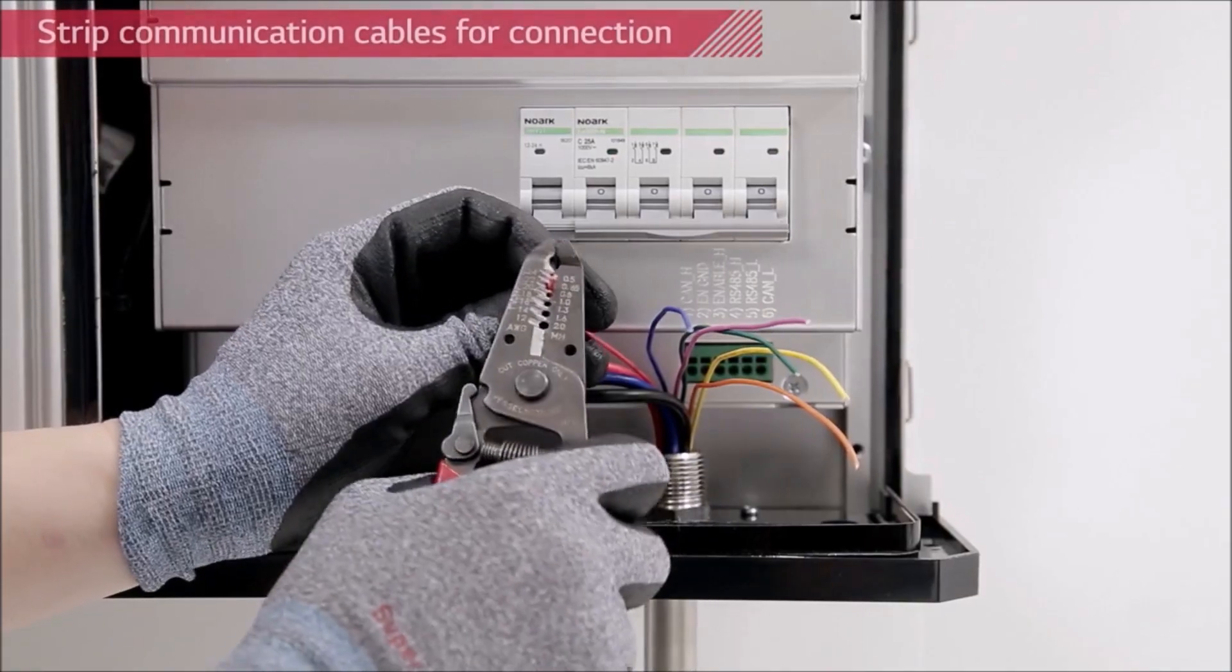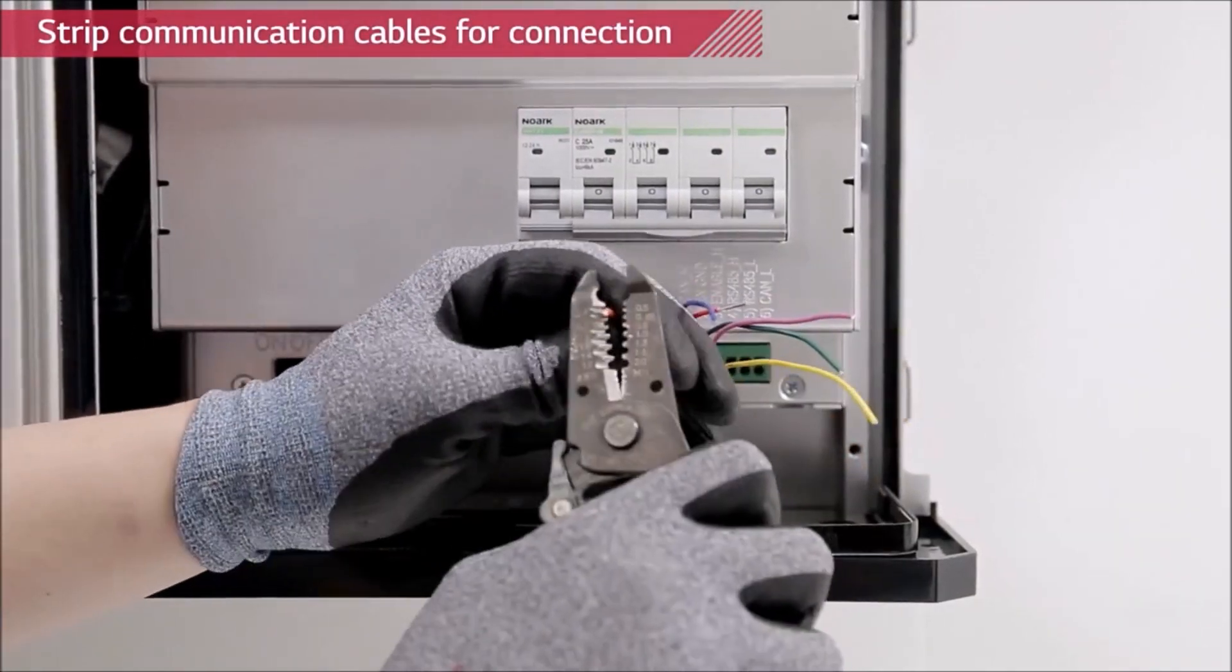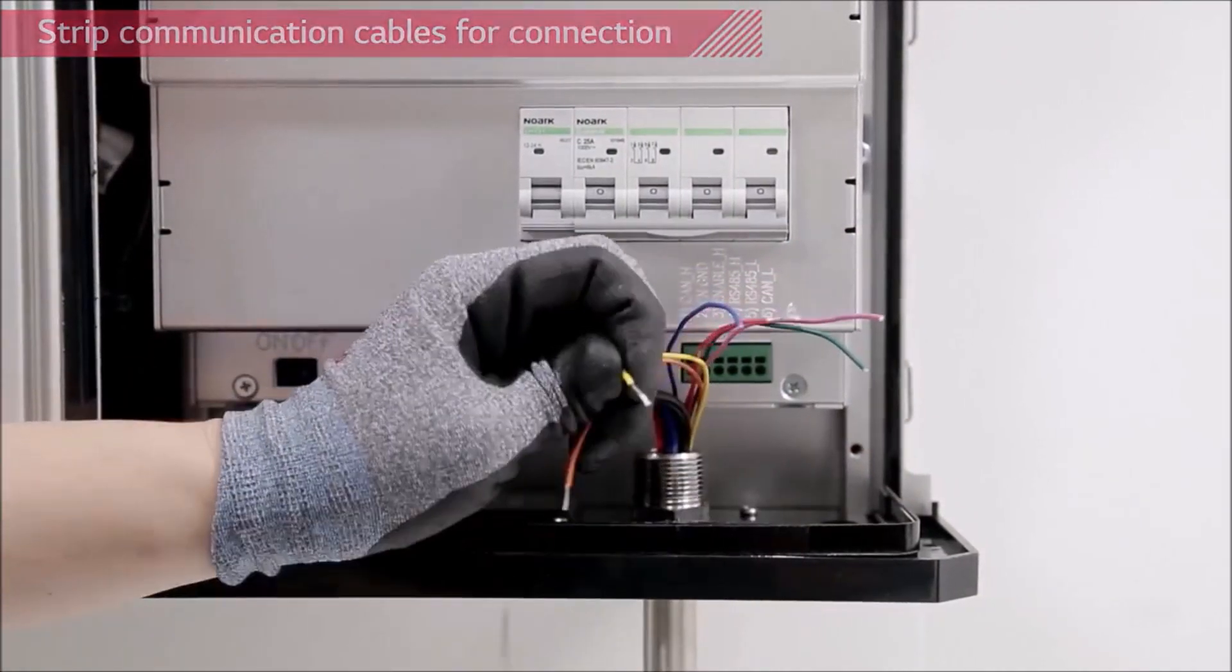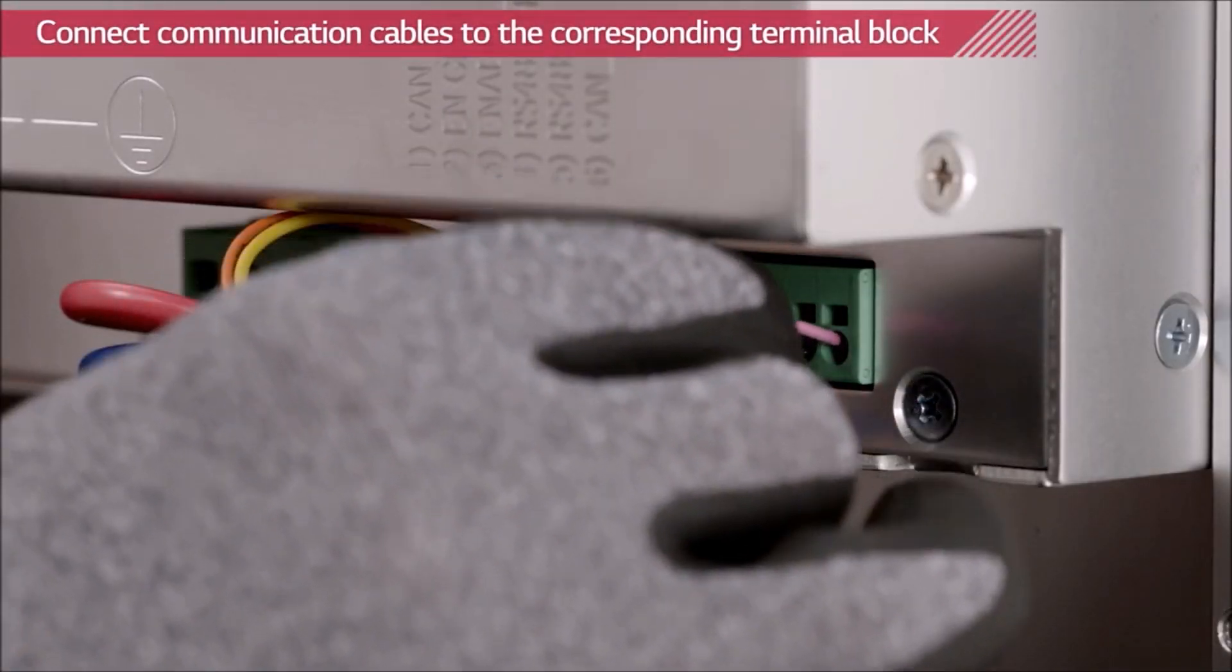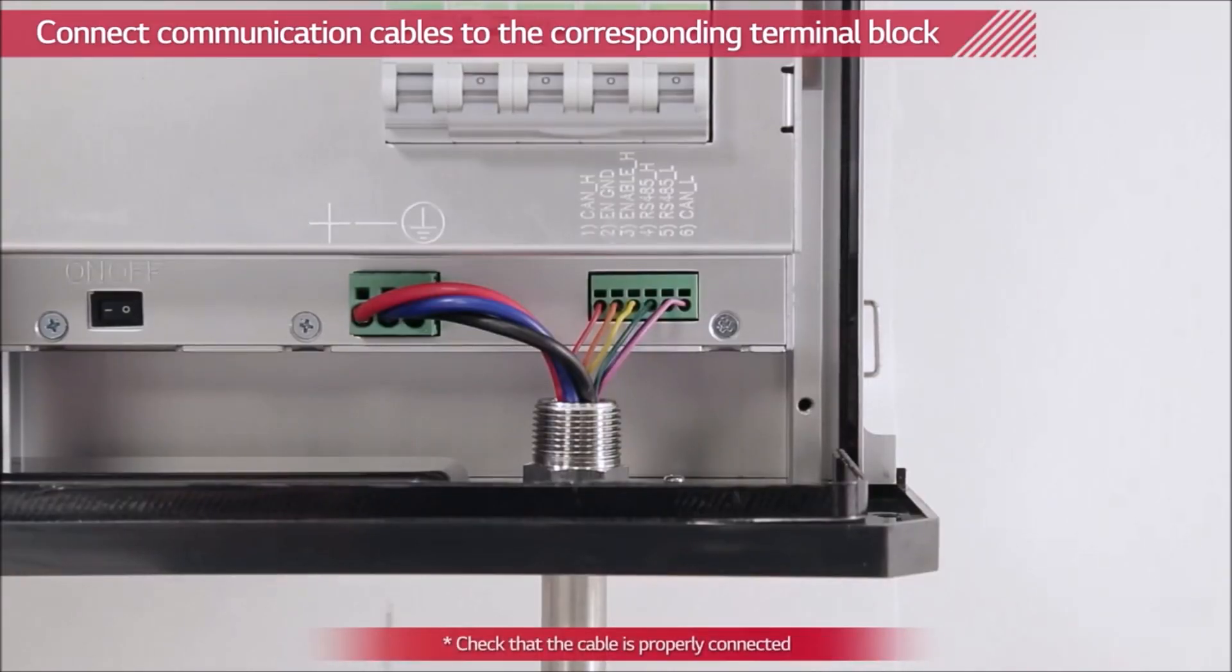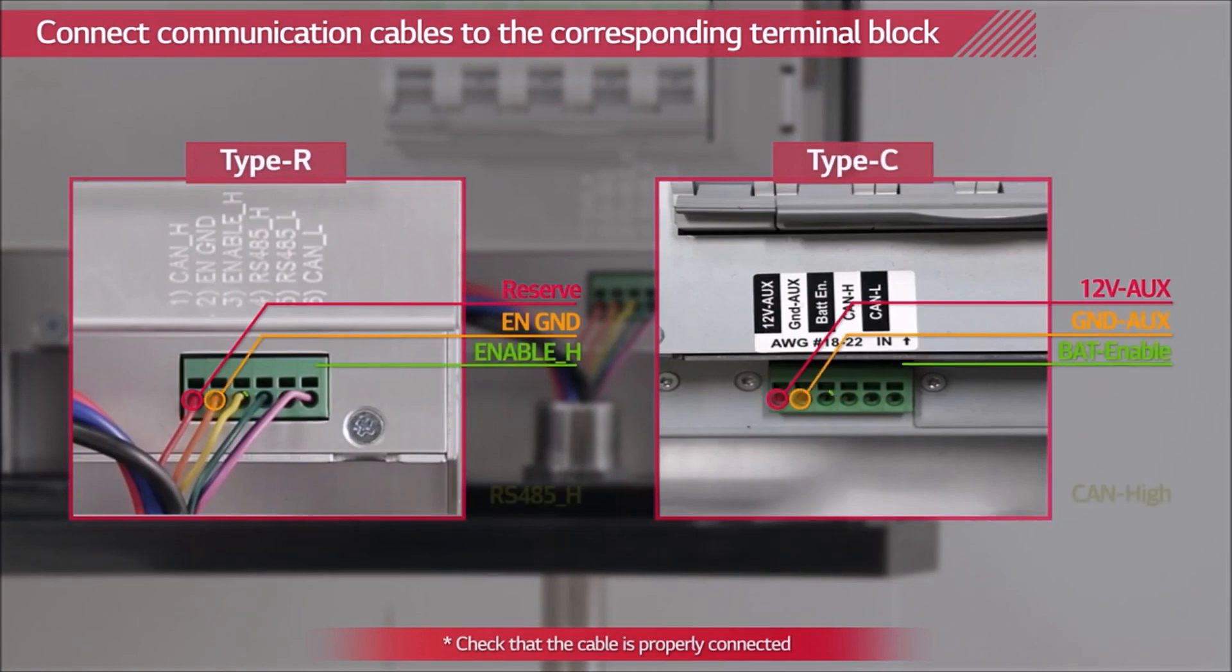Use wire stripper to cut off the wire coating of the communication cables. Connect the cables to the corresponding terminal blocks. Corresponding terminal blocks are marked above them.